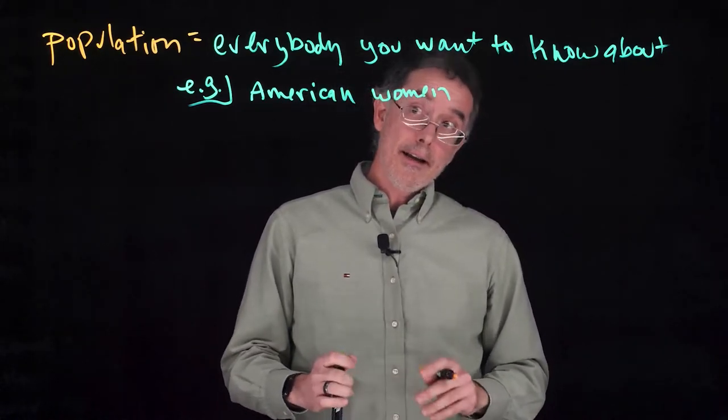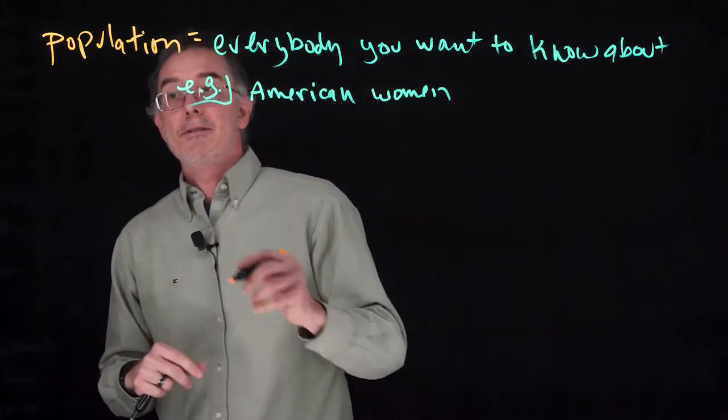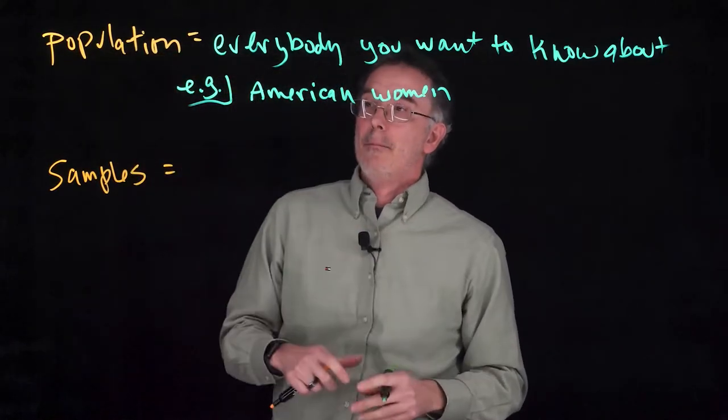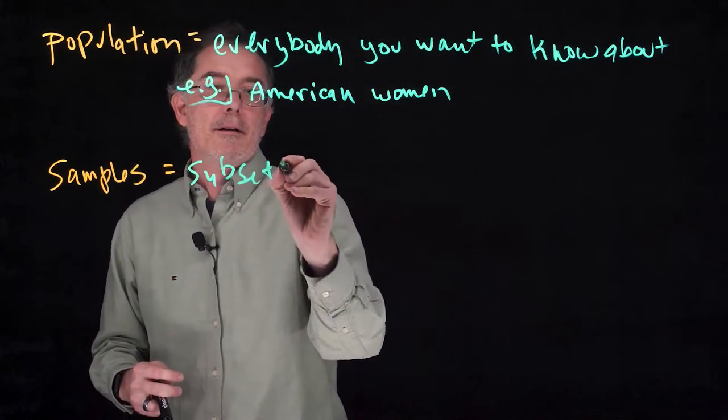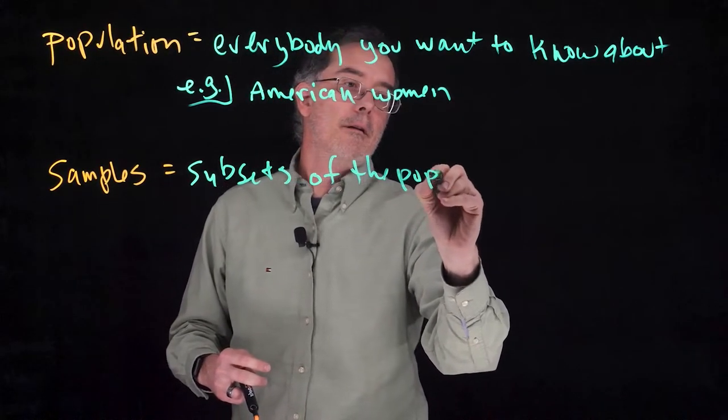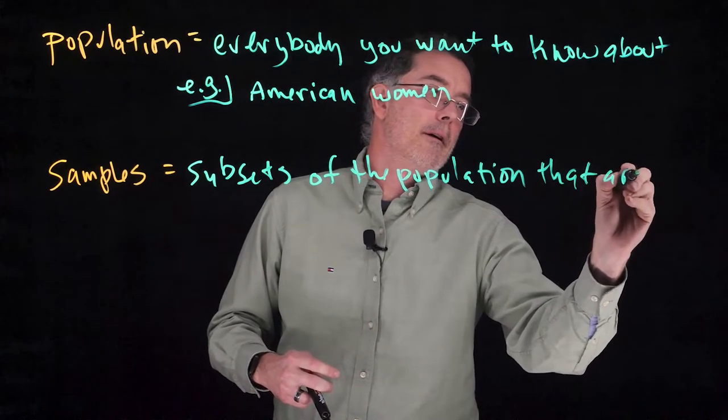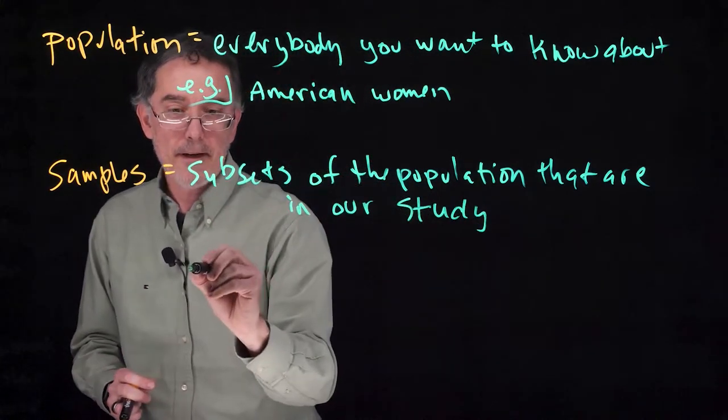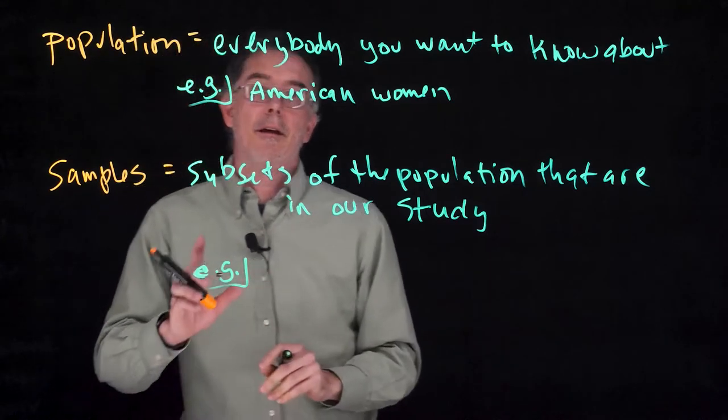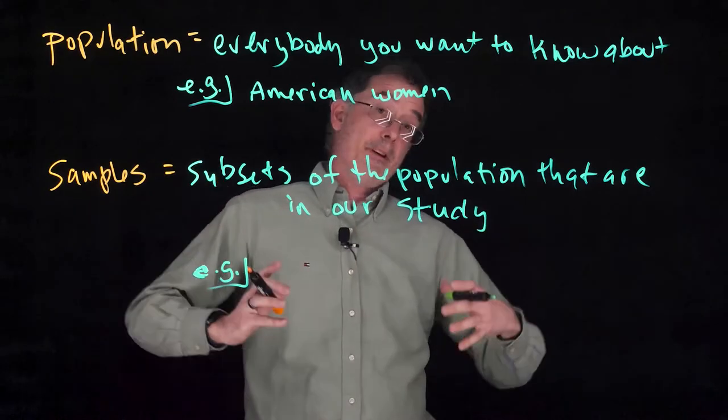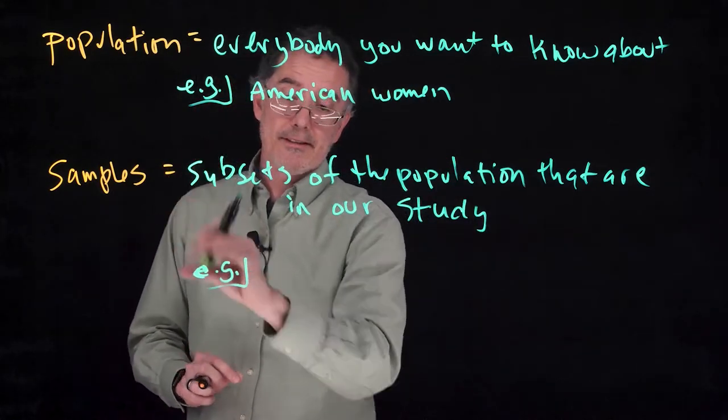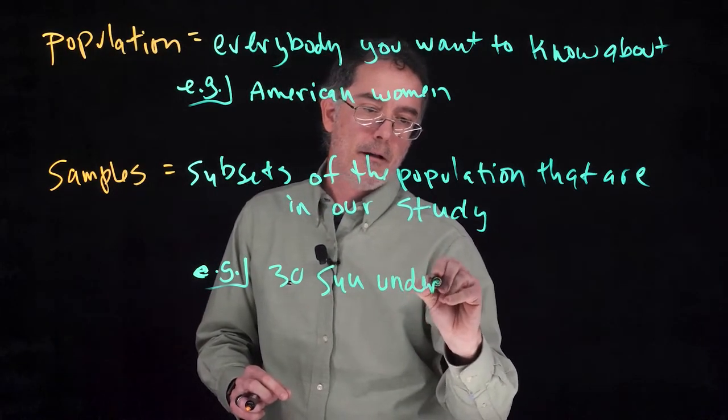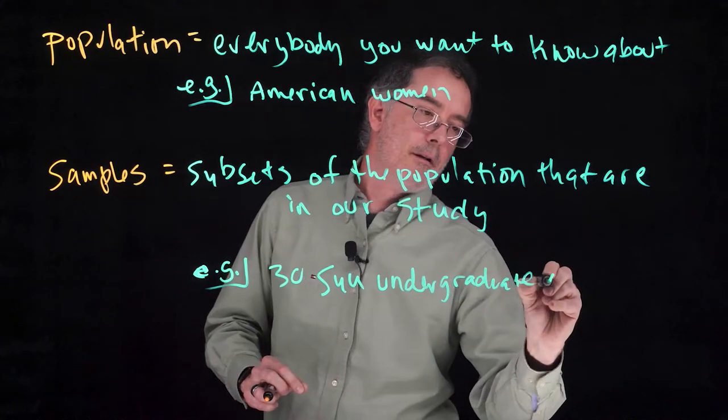Most researchers, though, are unable to measure everybody that they're interested in, and so as researchers, we get stuck working with samples. These samples are subsets of the population that are in our study. For example, we might be interested in the average height of American women, but because we're unable to access a large population of American women, we might end up with a sample of 30 Southern Utah University undergraduate women.